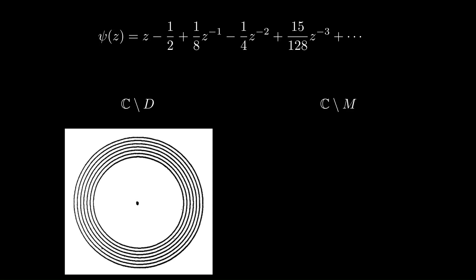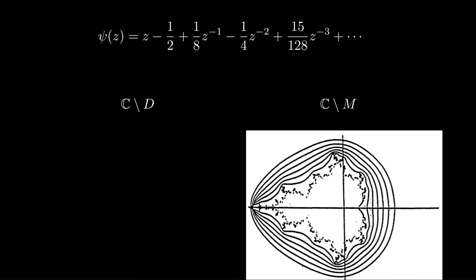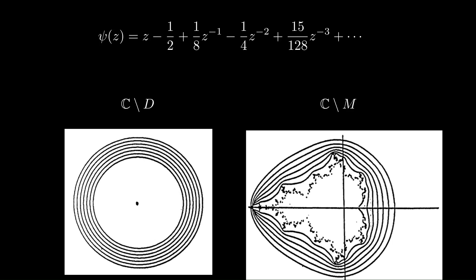Now one other very interesting thing about the Mandelbrot set is there's this function ψ, which is a Laurent series. And so it's defined for values of z outside the unit disk. So absolute value larger than one. And what it does is it actually maps the outside of the unit disk to the outside of the Mandelbrot set. And not only that, but it's a bijection. So it's a one to one correspondence. And it's infinitely differentiable. It's holomorphic. So it's really an isomorphism between the complement of the unit disk and the complement of the Mandelbrot set.